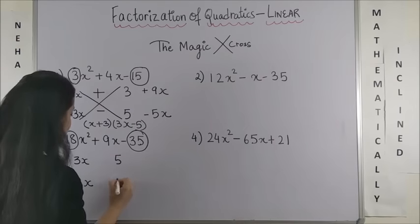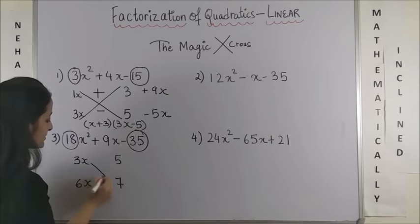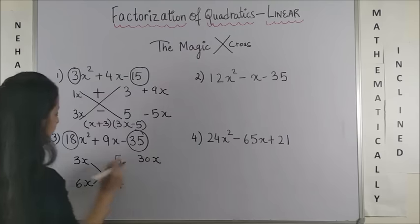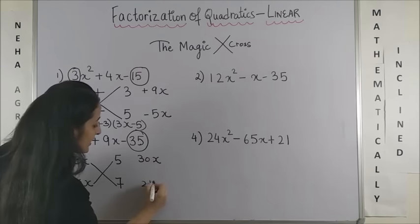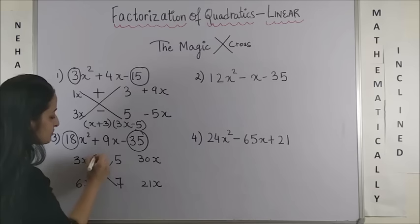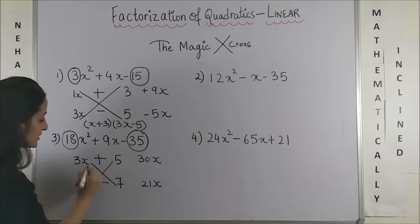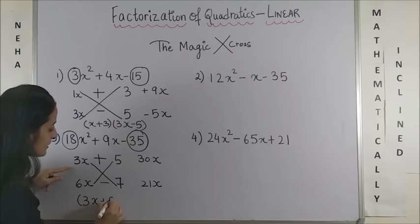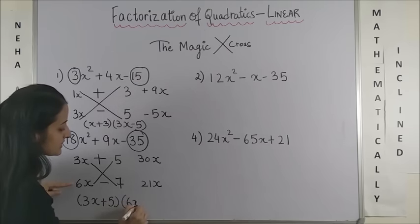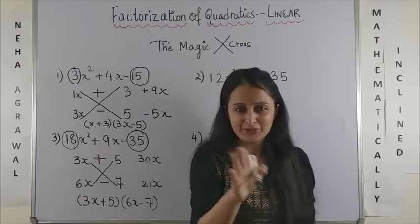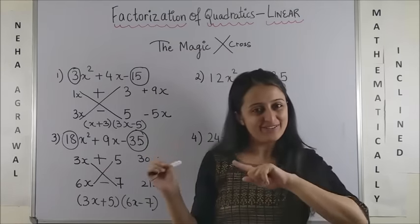So, once I do that, now if I cross multiply, this one gives me 30x, this one gives me 21x. You know the sign is positive. So, plus should come with the bigger number and minus with the smaller. The answer is 3x plus 5 into 6x minus 7. Bingo! I am sure it took less than 5 seconds. Have a look.